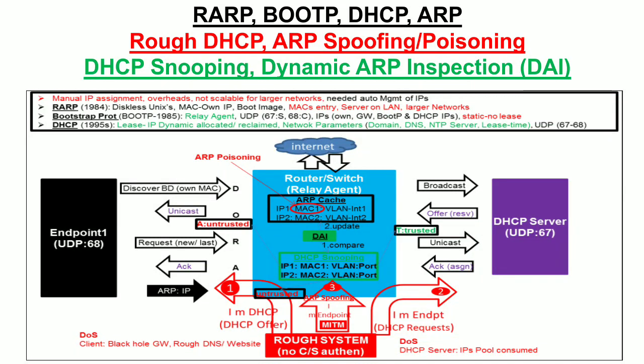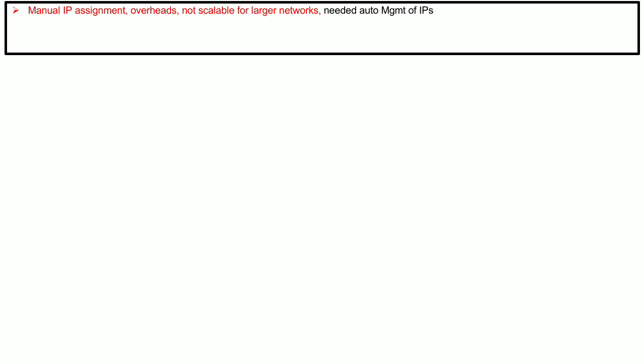In this video I will discuss certain networking protocols including their operations and security. These protocols are Reverse Address Resolution Protocol, Bootstrap Protocol, Dynamic Host Configuration Protocol, and Address Resolution Protocol. I will also discuss attacks against these protocols including rogue DHCP server and ARP spoofing or ARP poisoning, as well as countermeasures including DHCP snooping and Dynamic ARP Inspection, all covered in a single slide.